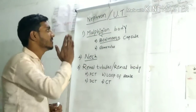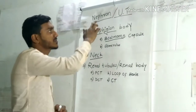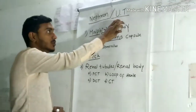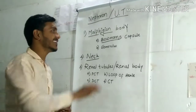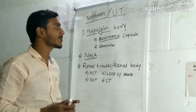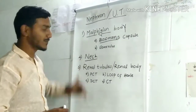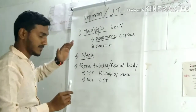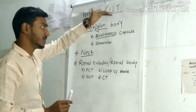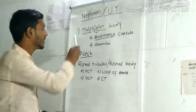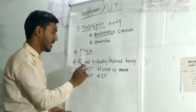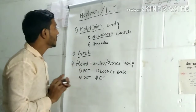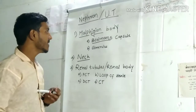After our first video, this is the second part — the structure of the nephron or the uriniferous tubules. UT stands for uriniferous tubules, not union territories. The nephron or uriniferous tubules is divided into three parts: first is the Malpighian body, second is the neck, and third is the renal tubules or renal body.